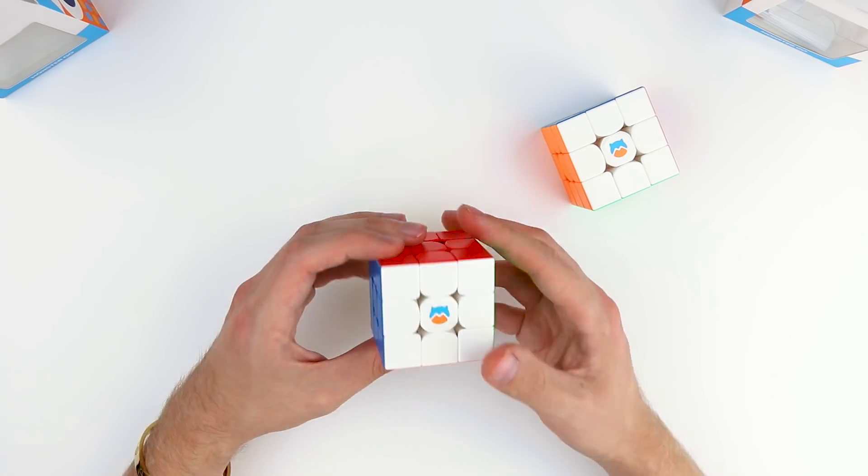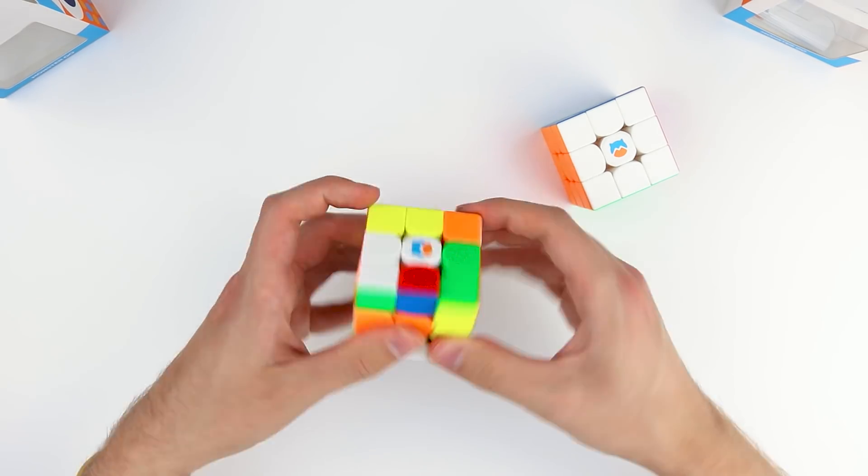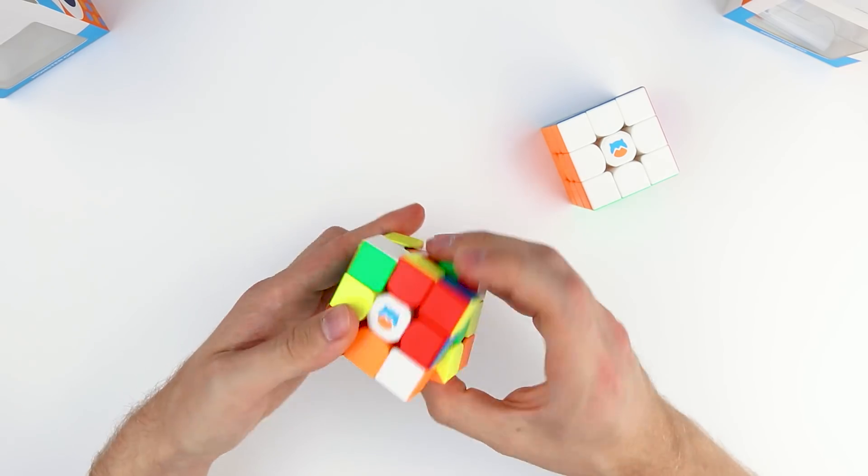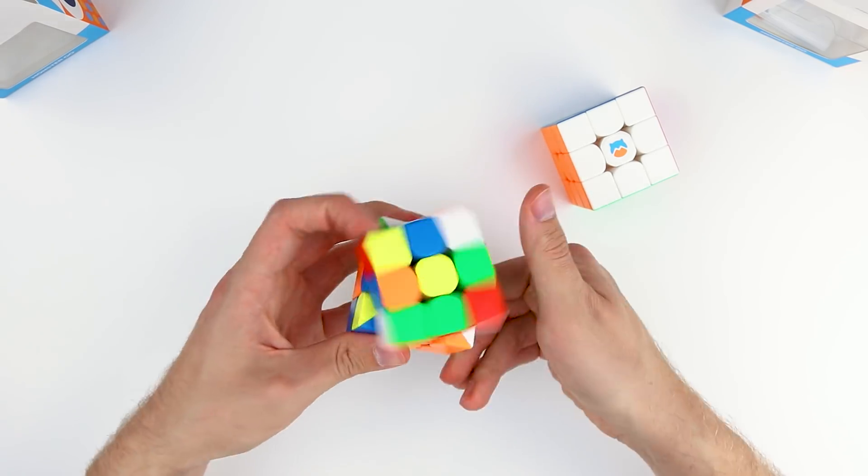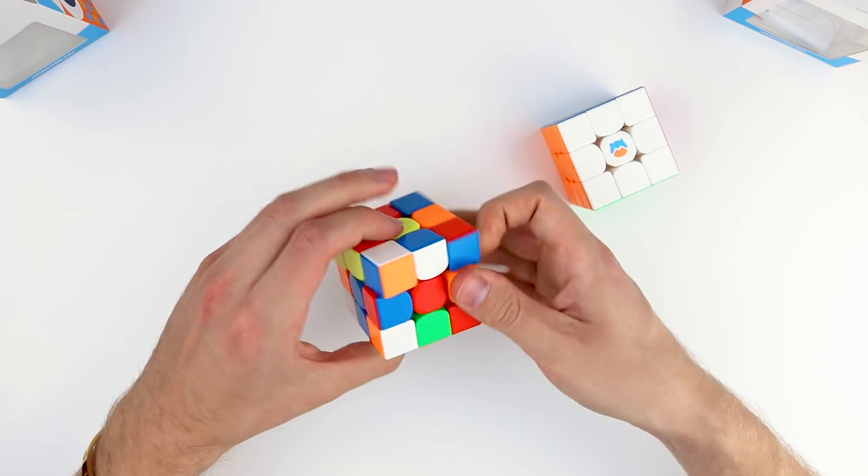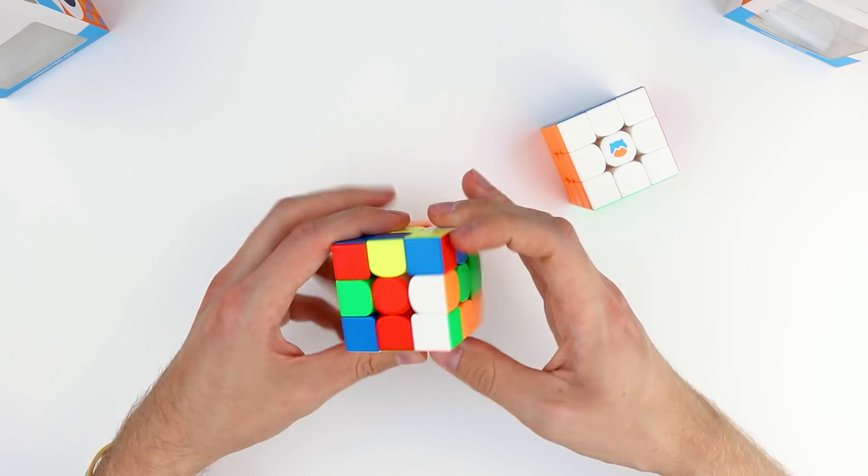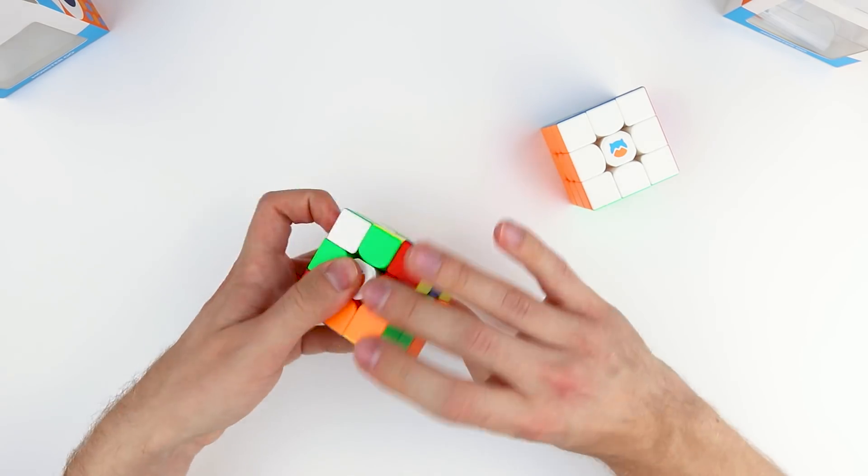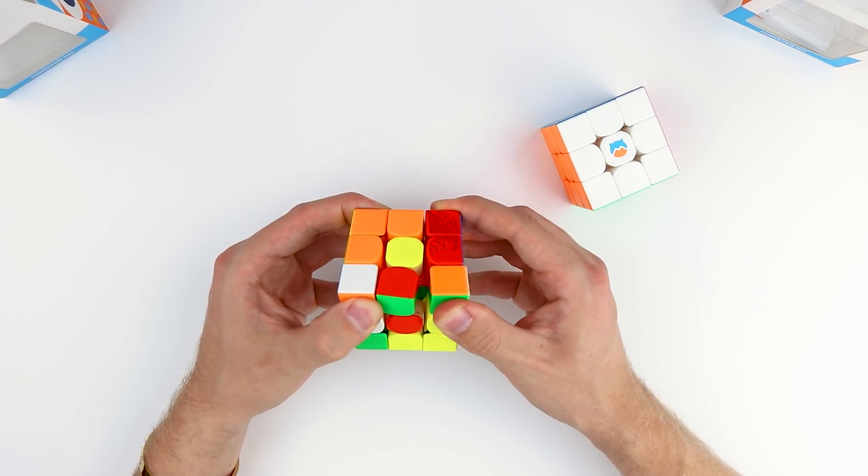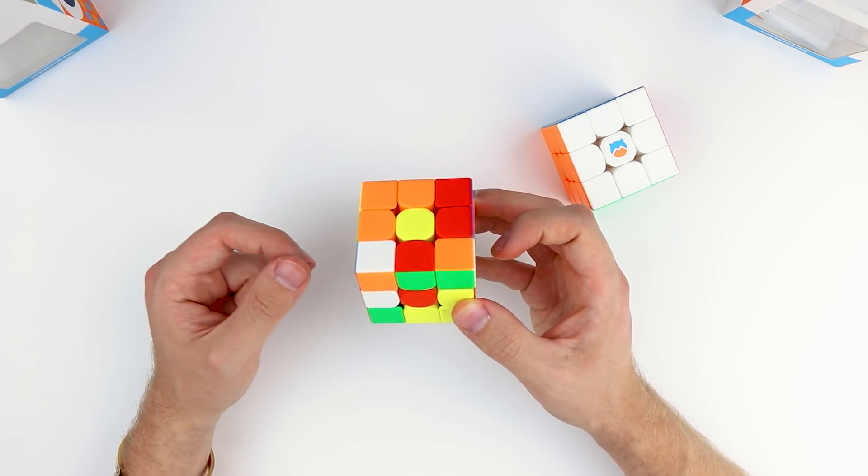So I'll show you guys a little bit more of the turning and do a quick example solve of the magnetized MonsterGo 3x3 or MG3. I have this completely on the original settings out of the box. I'm not going to add any lubricant or mess with the GES. Again, it's a solid cube. I like the stability of it. I like the fact that it's decently loose, but it doesn't really have any popping issues.